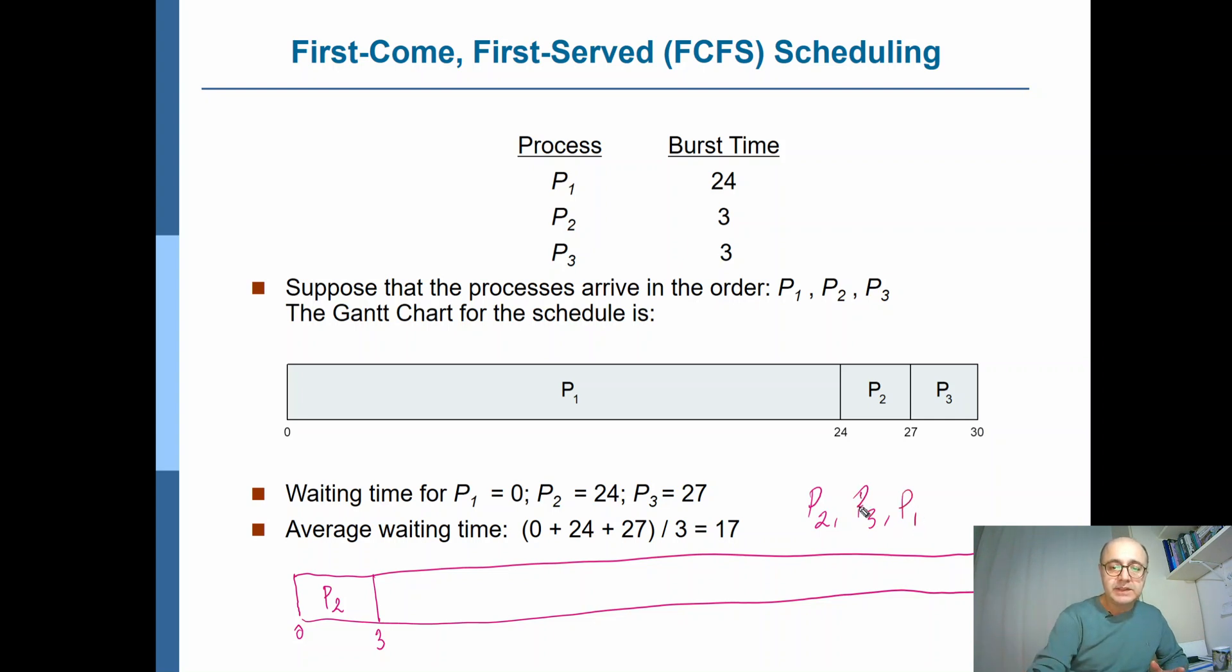Then - by the way, we assume that the processes arrived in the order P2, P3, P1, all again at t=0 but with slight time differences in this order - then P3 starts, that also takes three milliseconds, so up to six. And from six for 24 milliseconds, P1 would execute, so it would end at 30. So they both ended at 30. Very similar scenarios, just the order is P2, P3, P1 rather than P1, P2, P3.